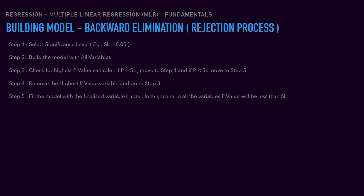Step four is to identify the independent variable which has a higher p-value than the significance level. Step five is fitting the model with the finalized variables. Then go back to step two to rebuild the model. If you want to remove a variable, again go to step three — check for the highest p-value variable. If there is any, go to step four. If there is no variable with a p-value higher than the significance level, go to step five.